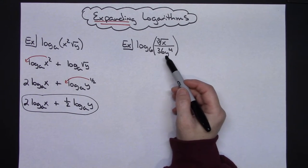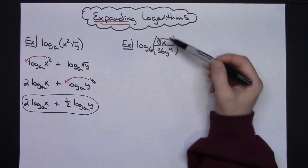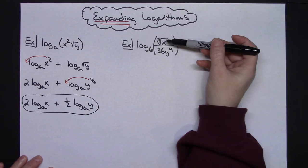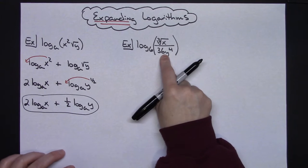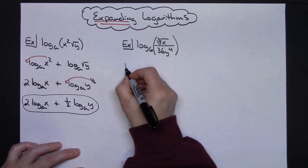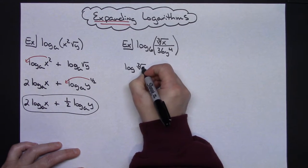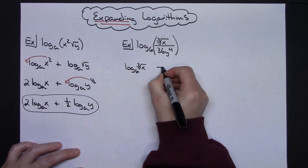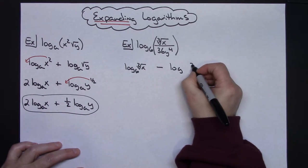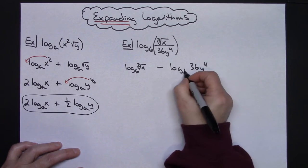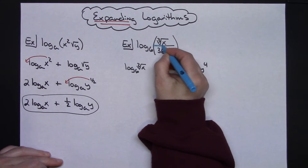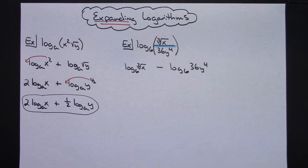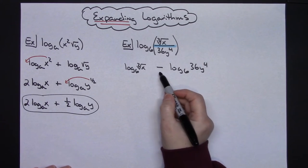Now in this second example I'm seeing a quotient. There is a property of logarithms that says when you see a quotient you can expand it into subtraction — so that's the first thing I'm going to do. I'm going to write this as the log base 6 of the cube root of x, minus the log base 6 of 36y to the 4th. That was the first step: I broke up the quotient and expanded it using subtraction.